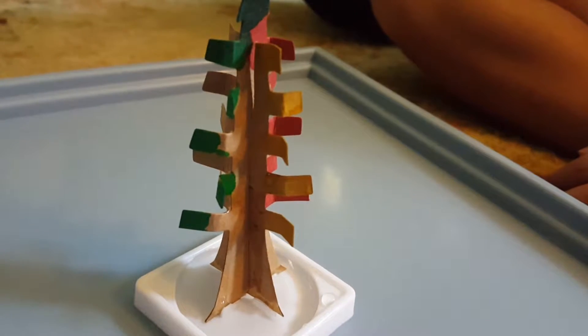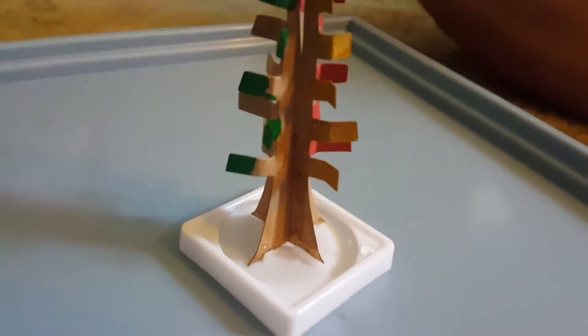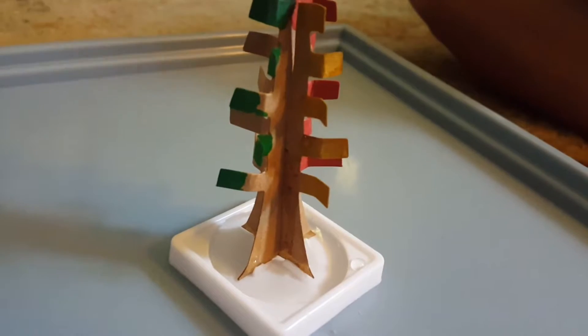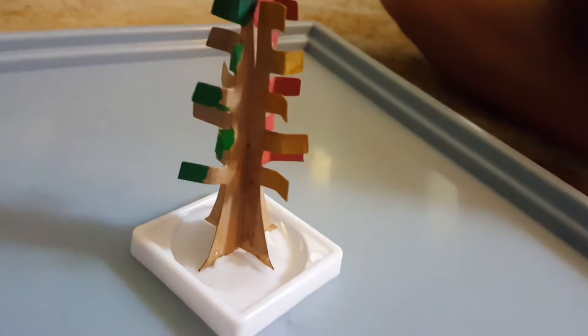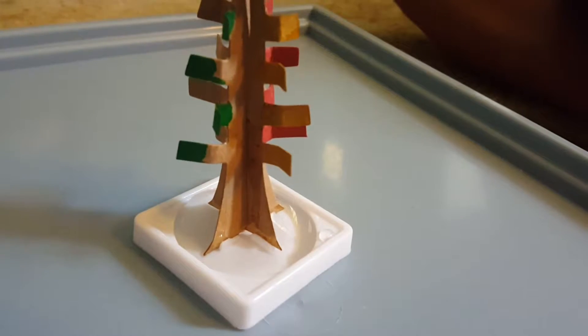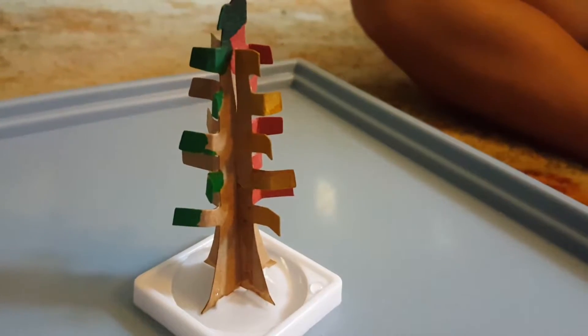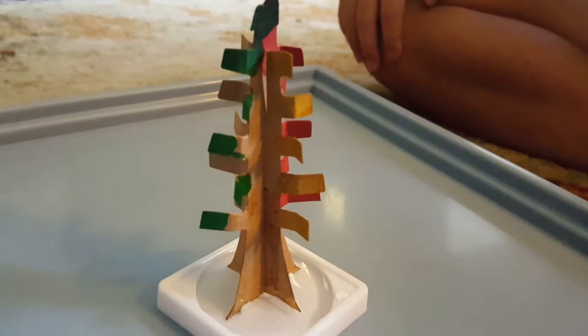Watch as it transforms into a colorful crystal tree. The explanation: The crystals grow through capillary action and evaporation. Capillary action absorbs the solution to the cardboard and the solution evaporates. As evaporation occurs, the crystals begin to form.